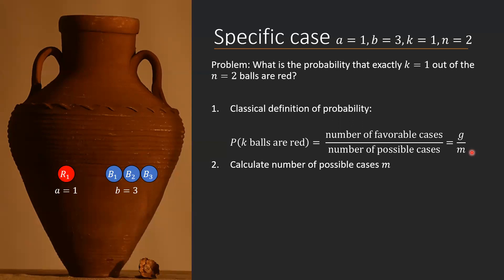I'll give two examples of cases. The first is that we picked the first red ball and the first blue ball. Another example is that we picked the first blue ball and the third blue ball. It matters which blue ball we pick, so B1, B3 is a different case from B1, B2. However, we do not care about the order in which the balls were picked — so R1, B1 is the same case as B1, R1. The only thing we care about is which balls we are holding, not the order we picked them up.